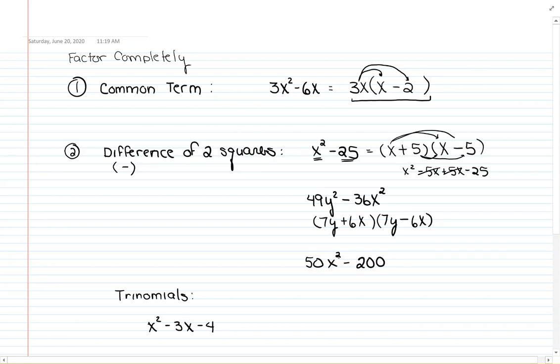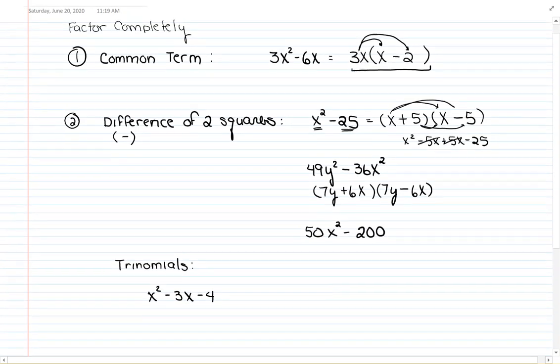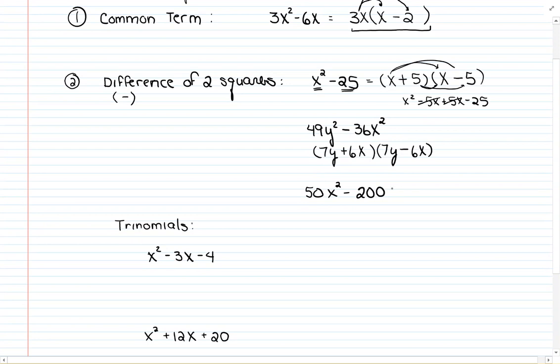But this last one, notice that these are both divisible by a number and that number happens to be 50. So I'm going to factor out the 50 first. See what I end up with. So if I factor out a 50 out of the first term, I'm left with x². If I take a 50 or divide 50 into the negative 200, I'm going to be left with negative 4.